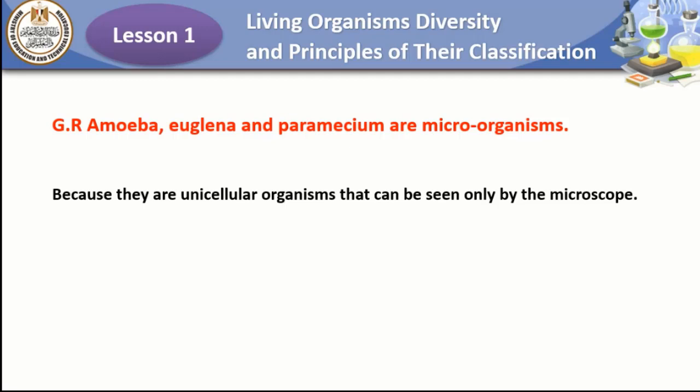Amoeba, Paramecium, and Euglena are microorganisms because they are unicellular organisms that can't be seen with the naked eye — only by microscope. Their bodies consist of only one cell.